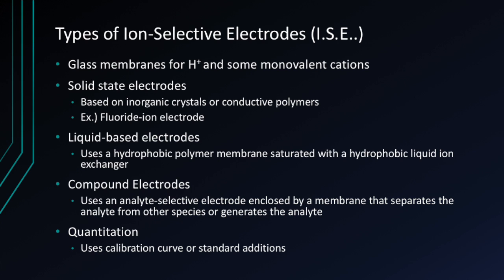There are various types of ion-selective electrodes. Glass membranes are used for H+ and some monovalent cations. Solid-state electrodes are based on inorganic crystals or conductive polymers — an example is the fluoride ion electrode. Liquid-based electrodes use a hydrophobic polymer membrane saturated with a hydrophobic liquid ion exchanger. Compound electrodes use an analyte-selective electrode enclosed by a membrane that separates the analyte from other species or generates the analyte, commonly seen with gases. Quantitation uses a calibration curve or standard additions.